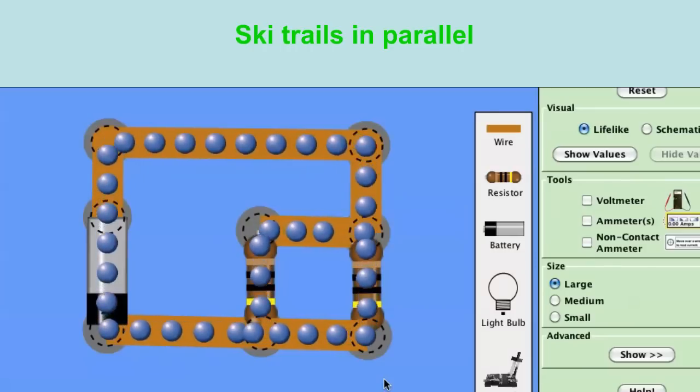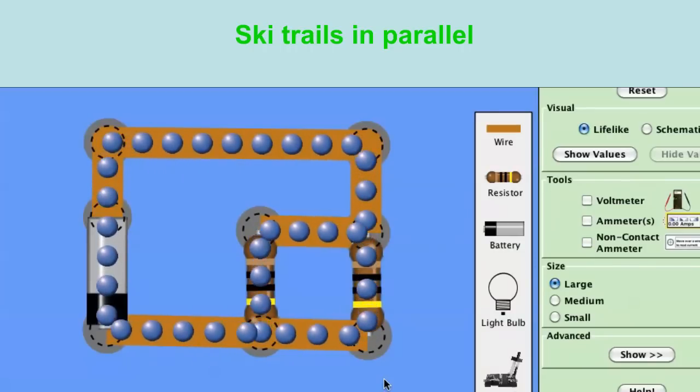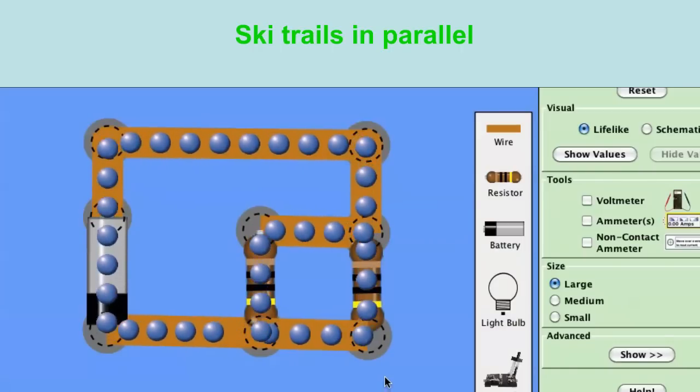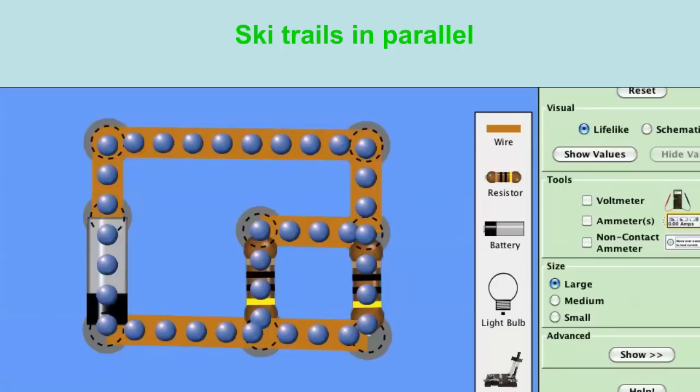What you should notice is that now the charges are moving a lot faster through the battery and up through that top wire, because you've given them more options to choose from. So actually the overall resistance of your circuit has decreased even though you added a resistor. It seems kind of counterintuitive but it's true.